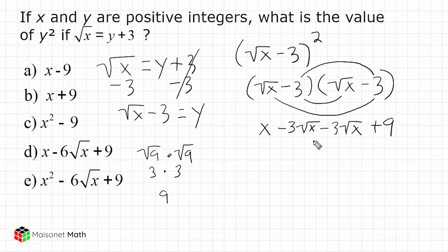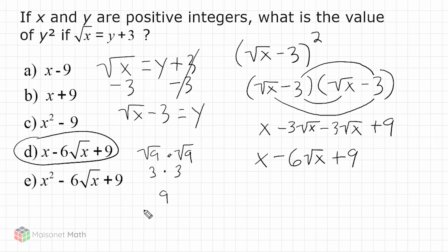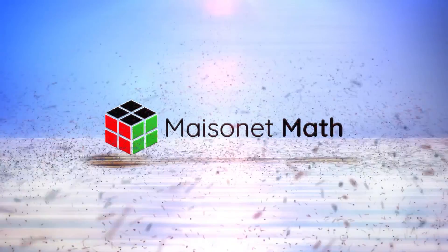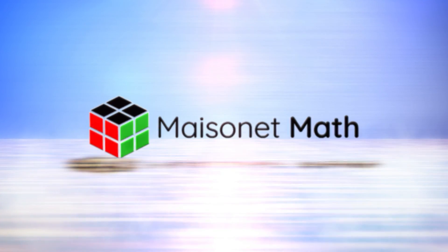Now we have four terms in this expression. The middle two terms are like terms because they're both in terms of the square root of x, so we combine them. We rewrite the expression as x, and combining those two middle terms gives minus 6 square root of x — we just add the coefficients, which is negative 6, and write the square root of x one time. Then we bring down the positive 9. There are no more like terms to combine, so our answer is choice D.